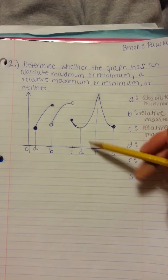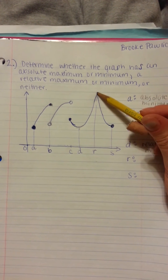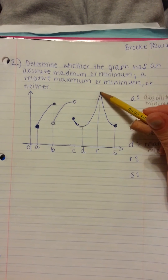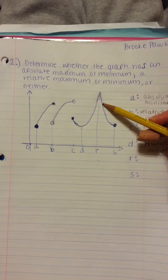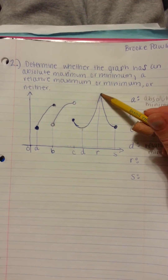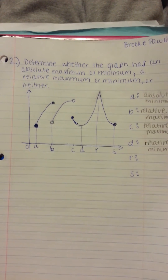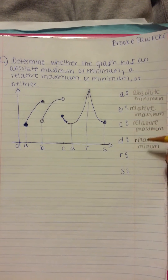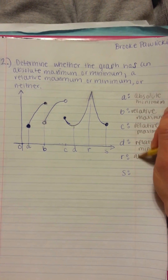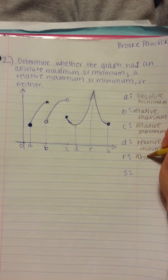For point R, by looking at it, we can tell it's a maximum. Since it's the highest value on the graph, we can call it an absolute maximum.